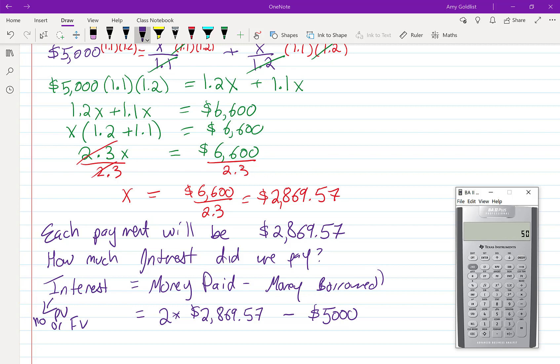and subtract 5,000. And it looks like I paid $739.14 in interest. That's how much this loan cost.